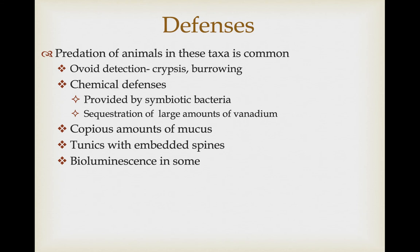In the tunicates — the urochordates — the tunic itself can be embedded with spines and provide leathery, thick protection to deter predators. And finally, in some of the pelagic forms dwelling in deeper ocean waters, they can flash bioluminescent patterns to startle potential predators.